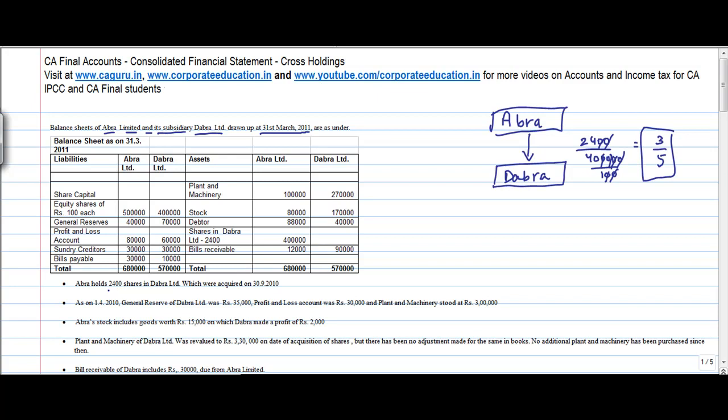Abra holds 2400 shares, 100 shares in Dabra Limited which were acquired on 3-9-2010. So 3-9-2010 is when the acquisition happened, acquisition date. And the balance sheet date is 31-3-2011. So there is a difference of 6 months here. The date when I have to calculate the pre-acquisition profits is the acquisition date which is 3-9-2010.